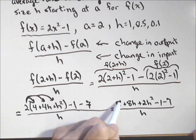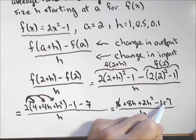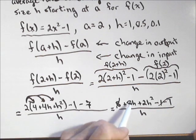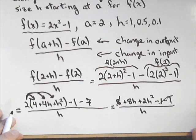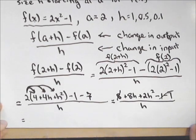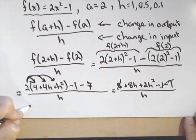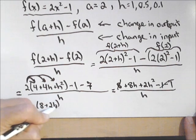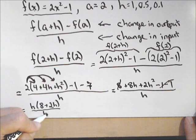Now, we've got some canceling, because we have a positive 8 and minus 1 minus 7 goes away. And now, I can actually factor an h out of the numerator.